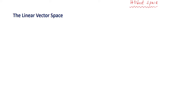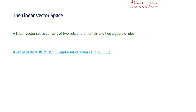A linear vector space consists of two sets of elements and two algebraic rules: a set of vectors Psi, phi, chi, and so on, and a set of scalars a, b, c, and so on, along with a rule for vector addition and a rule for scalar multiplication.